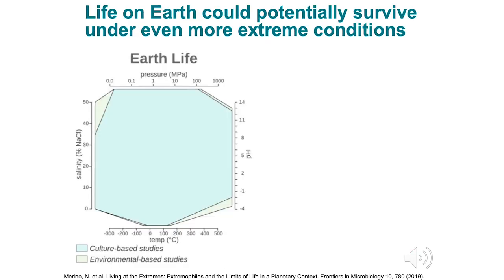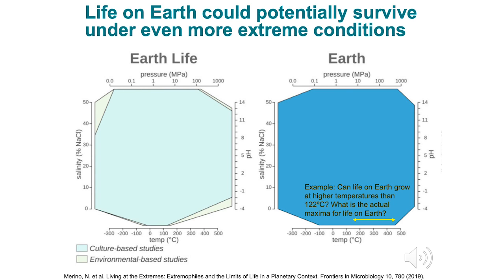Life on Earth could potentially survive under even more extreme conditions. This image shows temperature, pH, pressure, and salinity on different axes. The temperature ranges from minus 300 to 500 degrees Celsius, pH from minus 4 to 14, pressure from 0 to 1000 MPa, and salinity from 0 to 50%. The minimum and maximum for each parameter is plotted for life on Earth, showing the space which life occupies. When we look at all known extreme environments on Earth, we can see there is potential to push the boundaries further. For example, Earth's environments can reach much higher temperatures than the current maximum of 122°C, and there are many unexplored regions of Earth where new microbes have yet to be discovered.